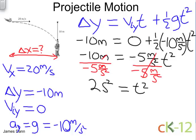So then we have two seconds squared equals t squared. To solve for time, we simply take the square root of both sides. We are now left with t equal to 1.4 seconds.